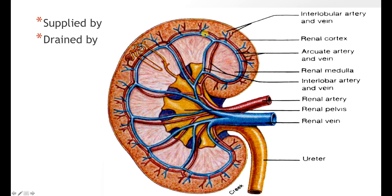The kidney is supplied by the renal artery, which is a branch of the abdominal aorta. The renal artery enters the kidney at the hilum and travels toward the lobes, where it becomes the interlobar arteries. From there it arches around, becoming the arcuate arteries. Branches of the arcuate arteries are called the intralobular arteries, and from there the blood enters the nephron via the afferent arteriole. Venous drainage follows essentially the same pathway in reverse.